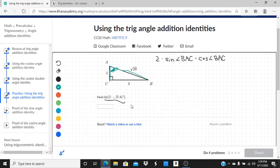So the sine of BAC is going to be the opposite side, so 3 over the hypotenuse square root of 10.